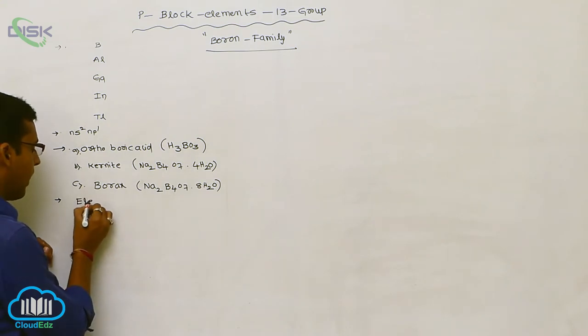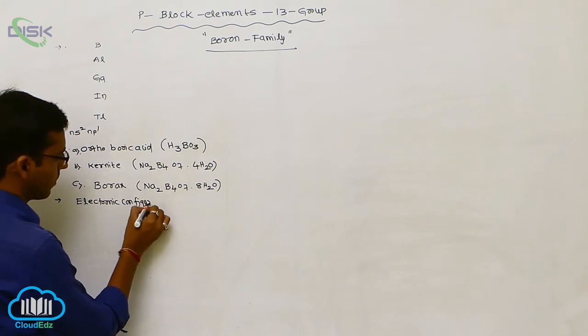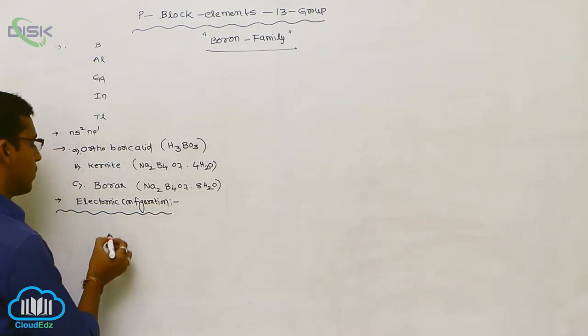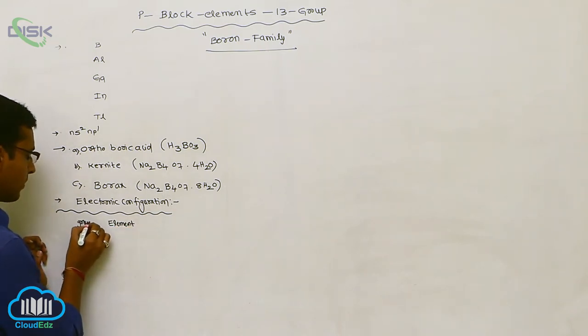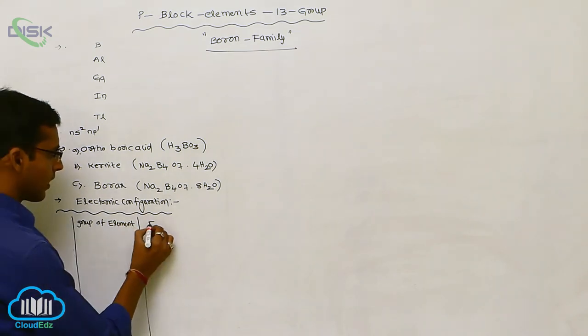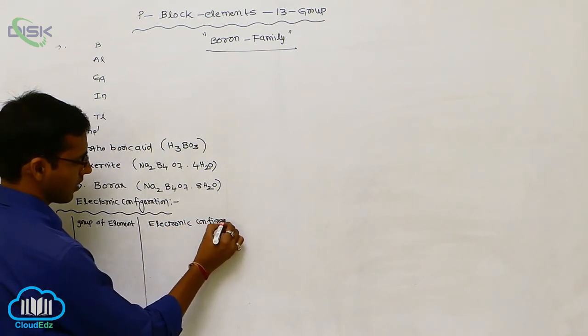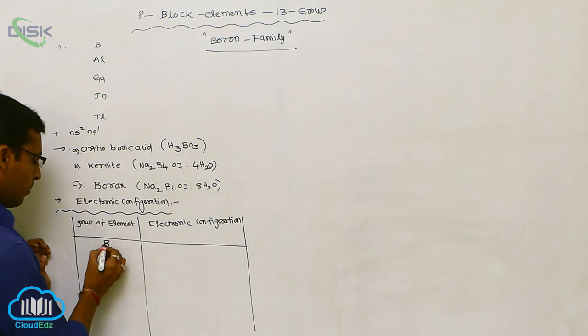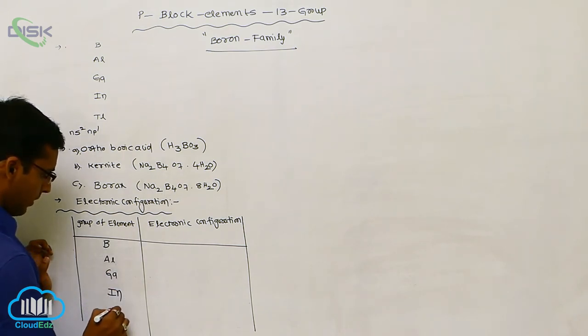In that, first one, electronic configuration. Elements means group of elements. What are the group elements? Boron, aluminium, gallium, indium, and thallium. It is near to helium, inert gas.